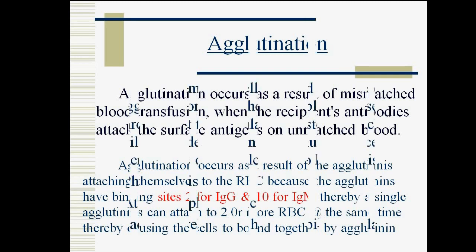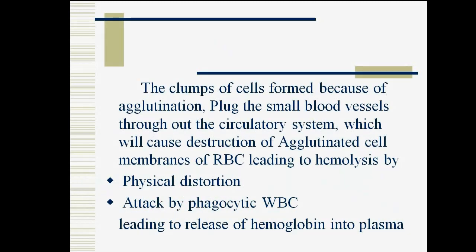The clumps of cells formed because of agglutination plug the small blood vessels throughout the circulatory system, which causes destruction of the agglutinated cells' membranes of RBCs, leading to hemolysis by physical distortion and attack by phagocytic WBCs, leading to the release of hemoglobin into the plasma.